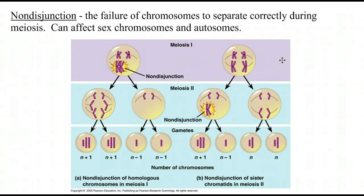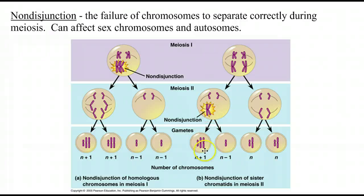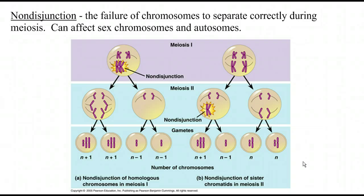It is possible for nondisjunction to occur in meiosis 1, which we just saw, but it could also occur in meiosis 2. In meiosis 1 the tetrads split and go into meiosis 2 just fine, but then for some reason this particular chromosome didn't split during anaphase 2. So again the result is that you get a gamete with an extra chromosome or a gamete missing a chromosome. This isn't quite so bad though because it also produces two normal gametes — so there's only about a 50% chance of having an aberrant gamete.